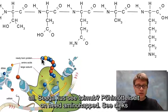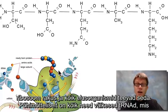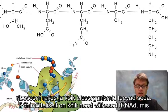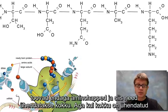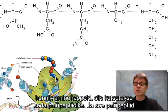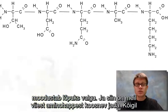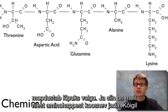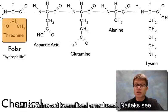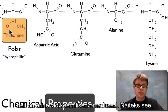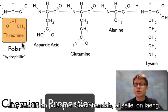This occurs at the ribosome in a cell, and all life does this. Little tRNAs bring their amino acids in, and we attach them together. When you have a bunch of amino acids attached together you have a polypeptide, and that polypeptide will eventually fold into a protein. Here's a five amino acid sequence — each will have different chemical properties. For example, threonine is going to be polar, meaning it's going to have a charge.